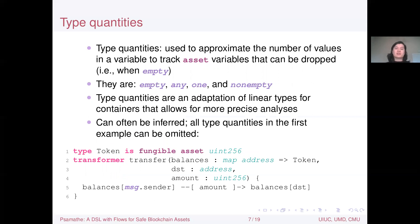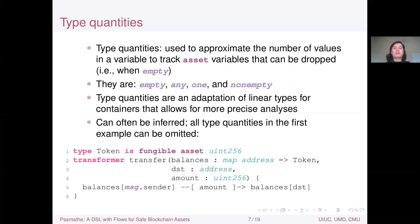Another important feature of Samathi is type quantities, which approximate the number of values in a variable — primarily to track asset variables that can be dropped. An asset variable can be dropped only if it is empty. The supported type quantities are: empty (zero values), any (any number), one (exactly one), and non-empty (at least one). Type quantities are an adaptation of linear types for containers enabling more precise analyses, and they can often be inferred or inserted with well-chosen defaults.